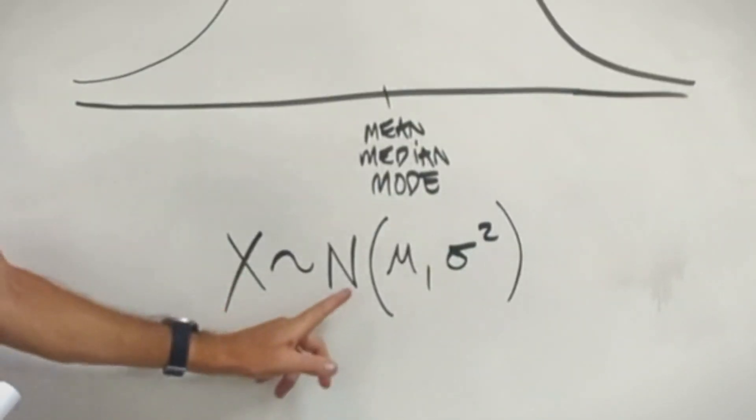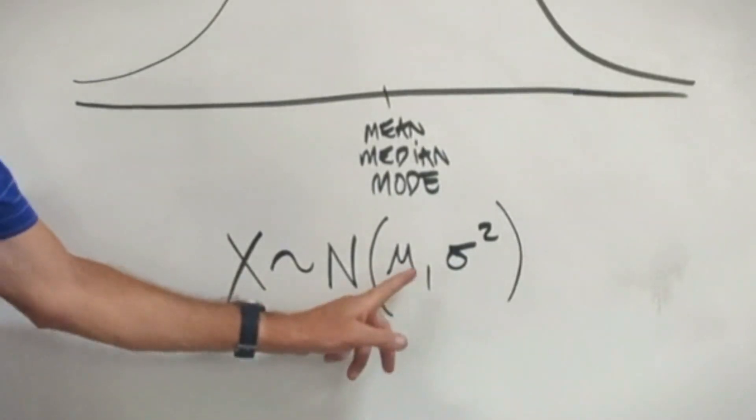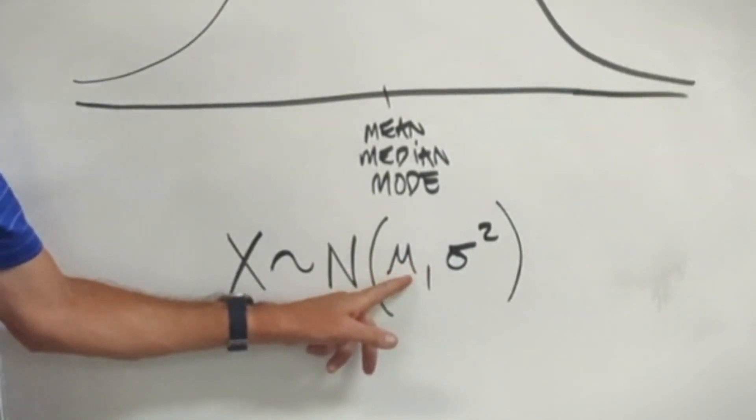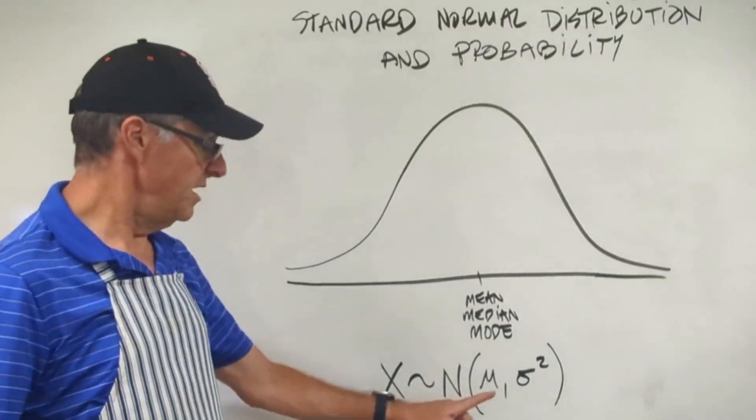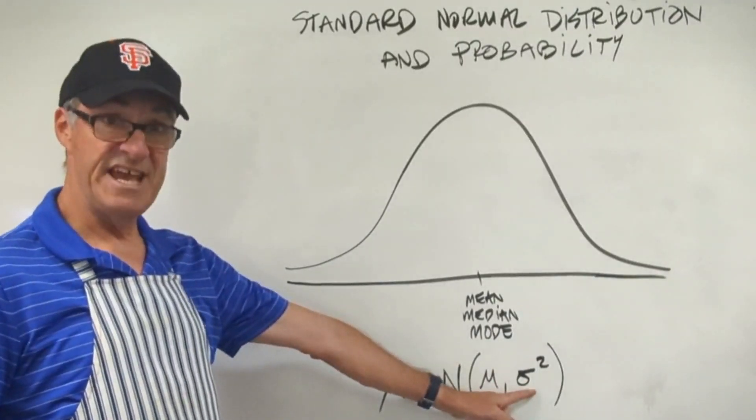Random variable x. Now the n here means normal distribution. And then remember, mu, this stands for the mean or the average. And then sigma squared is the variance. Okay, so average spread of data.